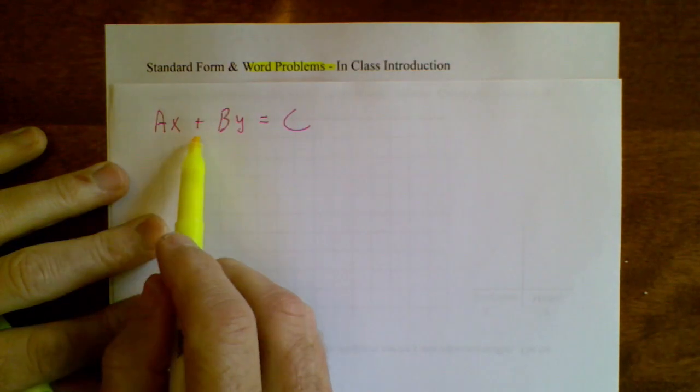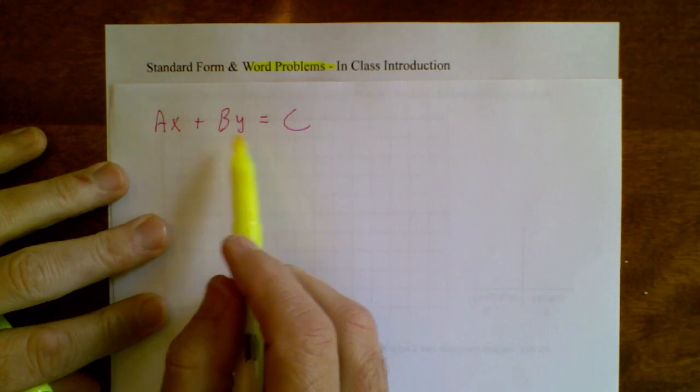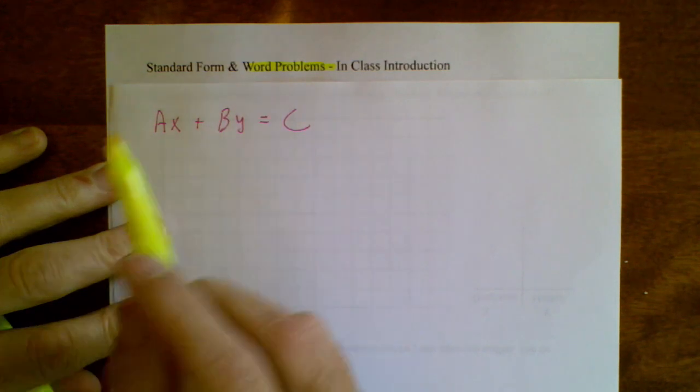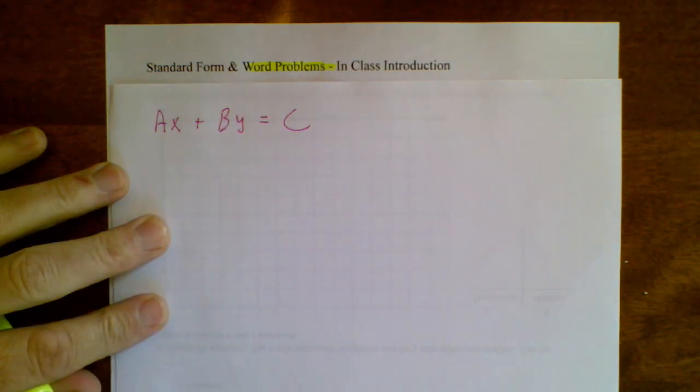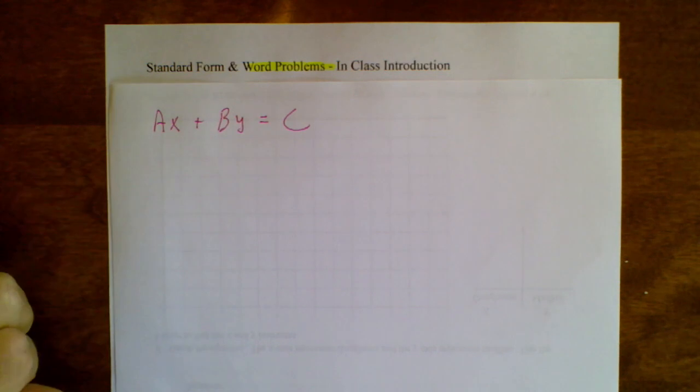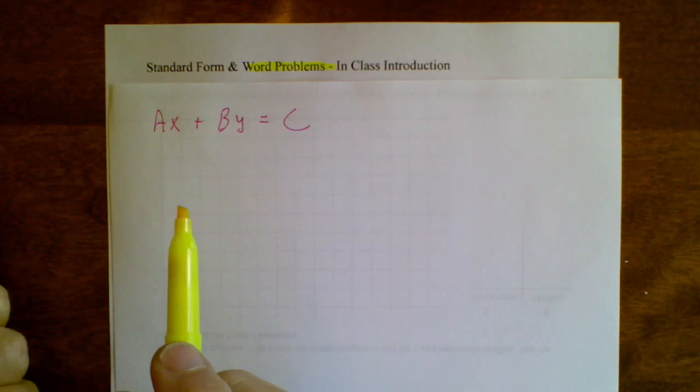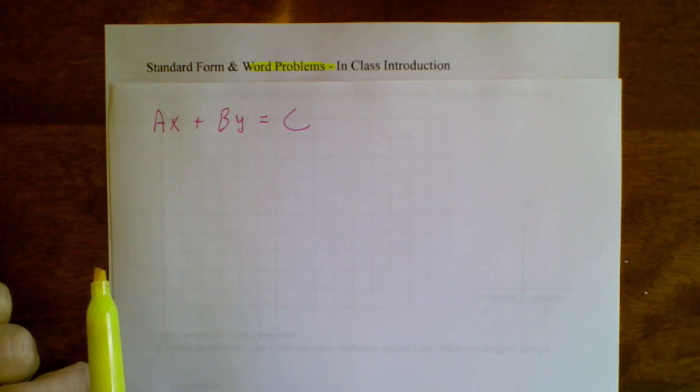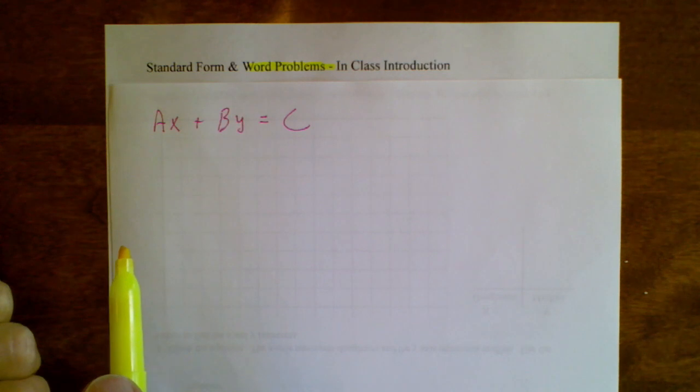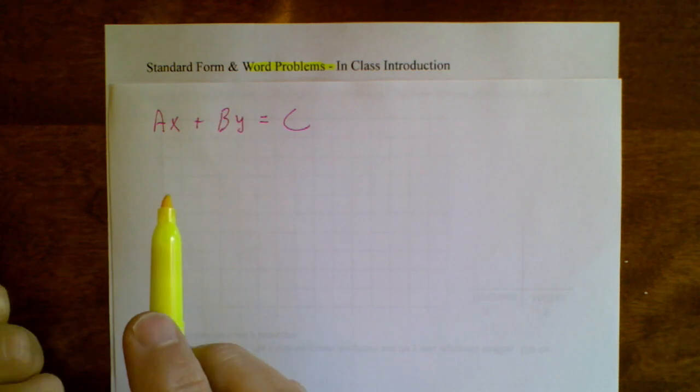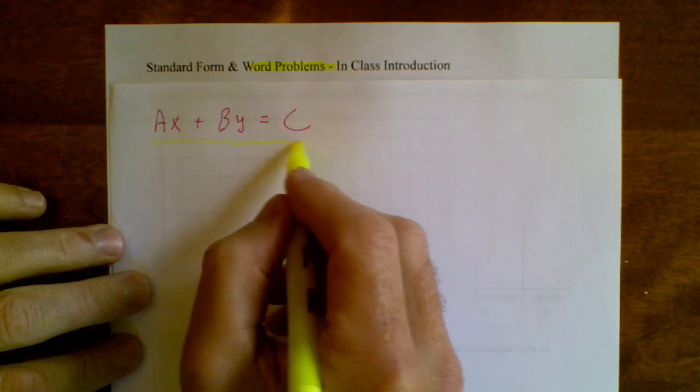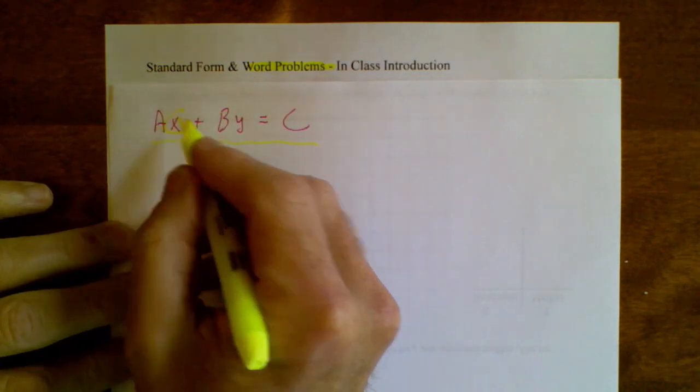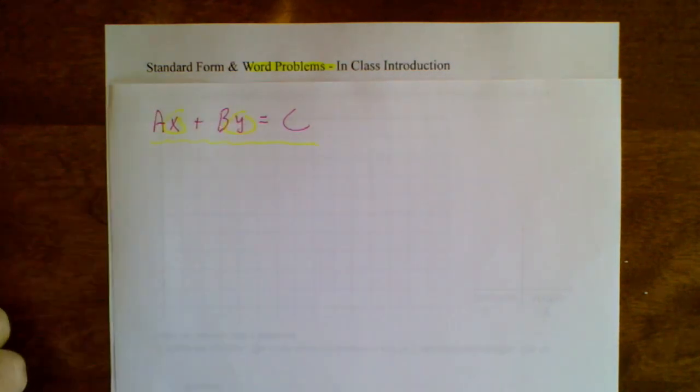You're familiar with standard form AX plus BY equals C. Now we're going to see how this can work in the world of word problems. And here's the good news. Very frequently, earlier in word problems, you would have the temptation to have two different variables in your word problem. And usually we were told, nope, can't do that. Well, now you will be able to have two variables. You'll be able to have a variable X and Y.